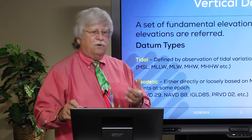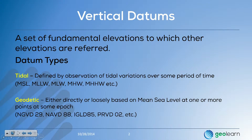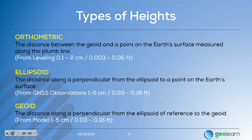In discussing vertical datums, it's really important to first get a handle on the different types of heights. There are several different types of heights, and regrettably there are a lot of people who don't know much about this. I'm only going to touch on the ones that are typically the most important. There are other types of heights, such as dynamic heights, but we just don't have the time in a session like this to go into great depth on types that may not be commonly used.